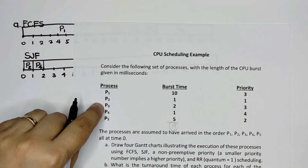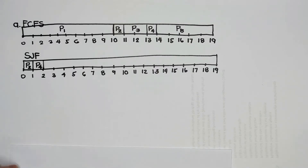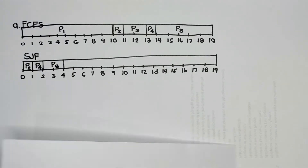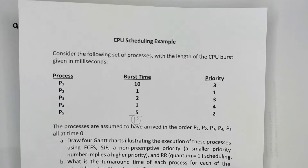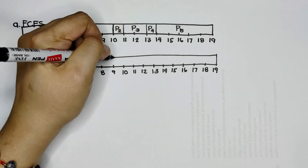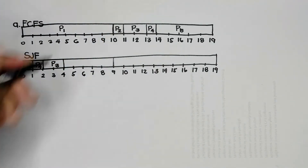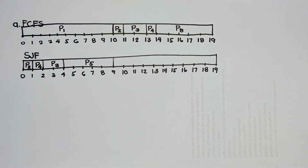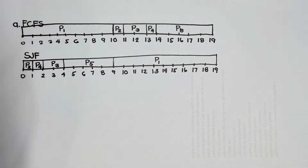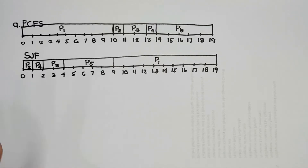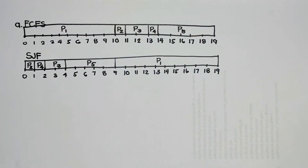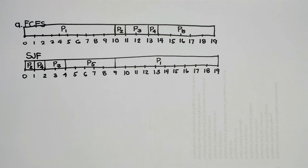After P2 and P4, next is P3 with burst time 2, then P5 with burst time 5, and finally P1 last because it is the longest with burst time 10. Checking: 1+1+2+5+10 = 19. We now have the completed Gantt chart for SJF: P2, P4, P3, P5, P1.